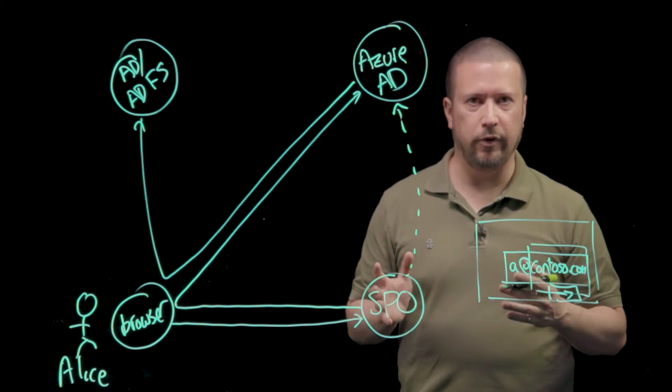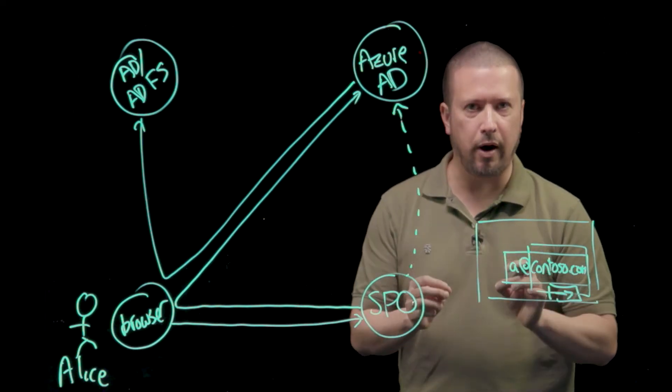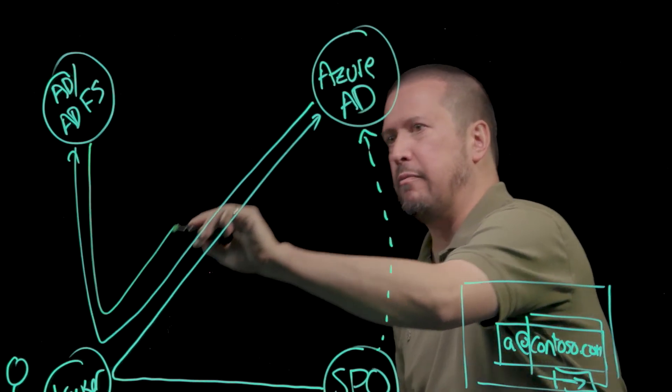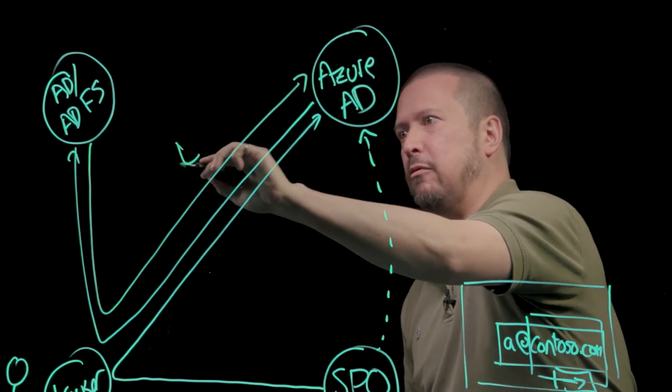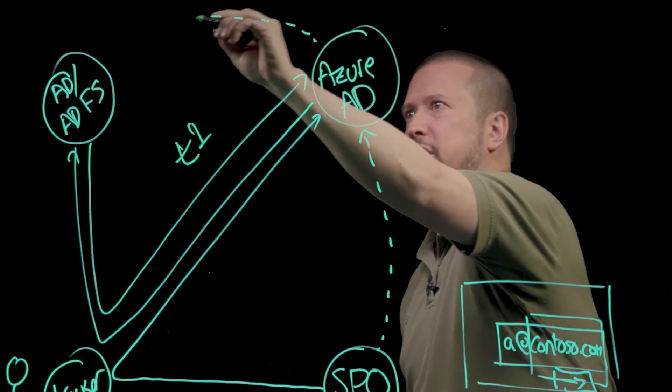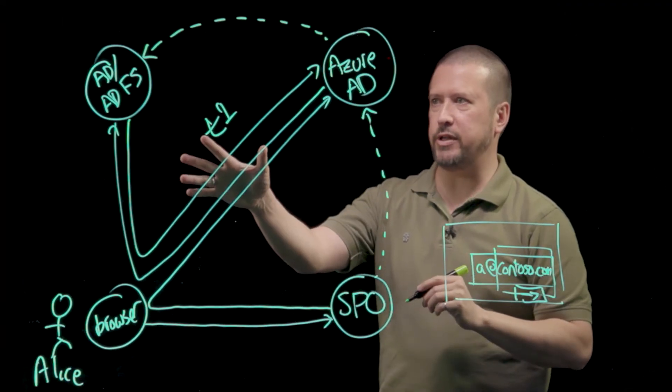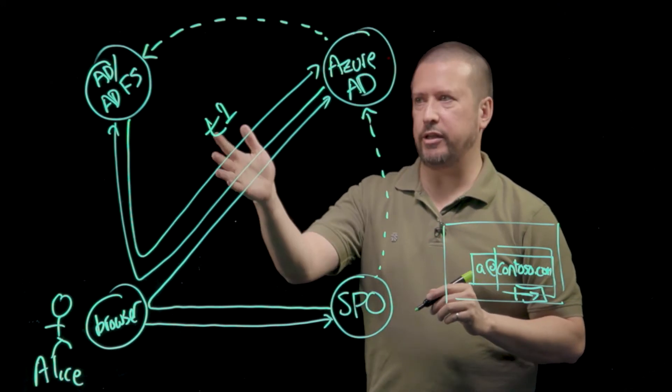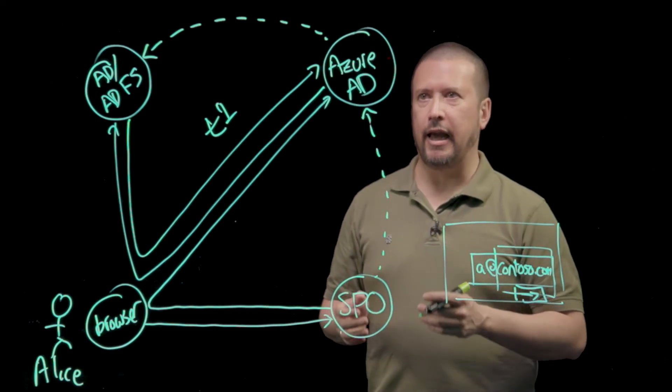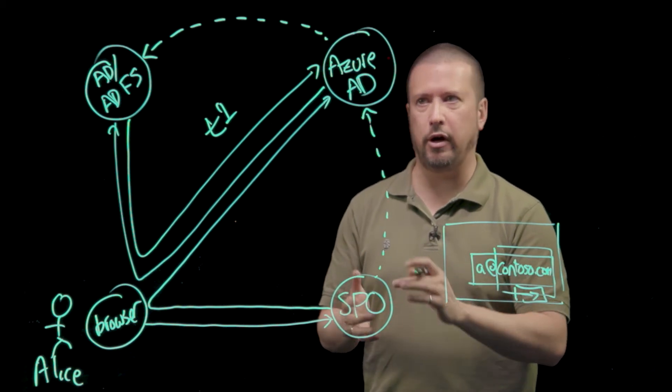Either way, the ADFS server signs her in, makes sure it really is Alice, and then it responds to that sign-in request from Azure AD. It sends a token back through to Azure AD, we'll call it T1, that represents Alice. Because of the trust relationship that Azure AD has with Contoso's ADFS server, it can validate the signature on that token T1 and recognize that this is Alice. Then it can respond to that sign-in request that was sent originally by SharePoint Online.